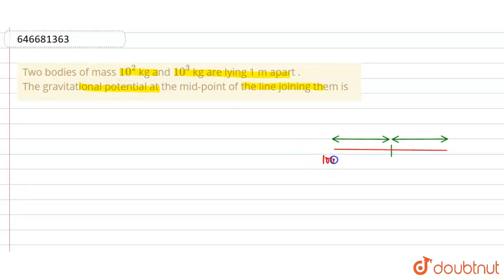100 kg and 1000 kg, separated by a distance of 1 meter. At the midpoint, this distance becomes 0.5 and this is also 0.5, and the whole distance is 1 meter. These are two bodies and we have to find the gravitational potential at the midpoint.